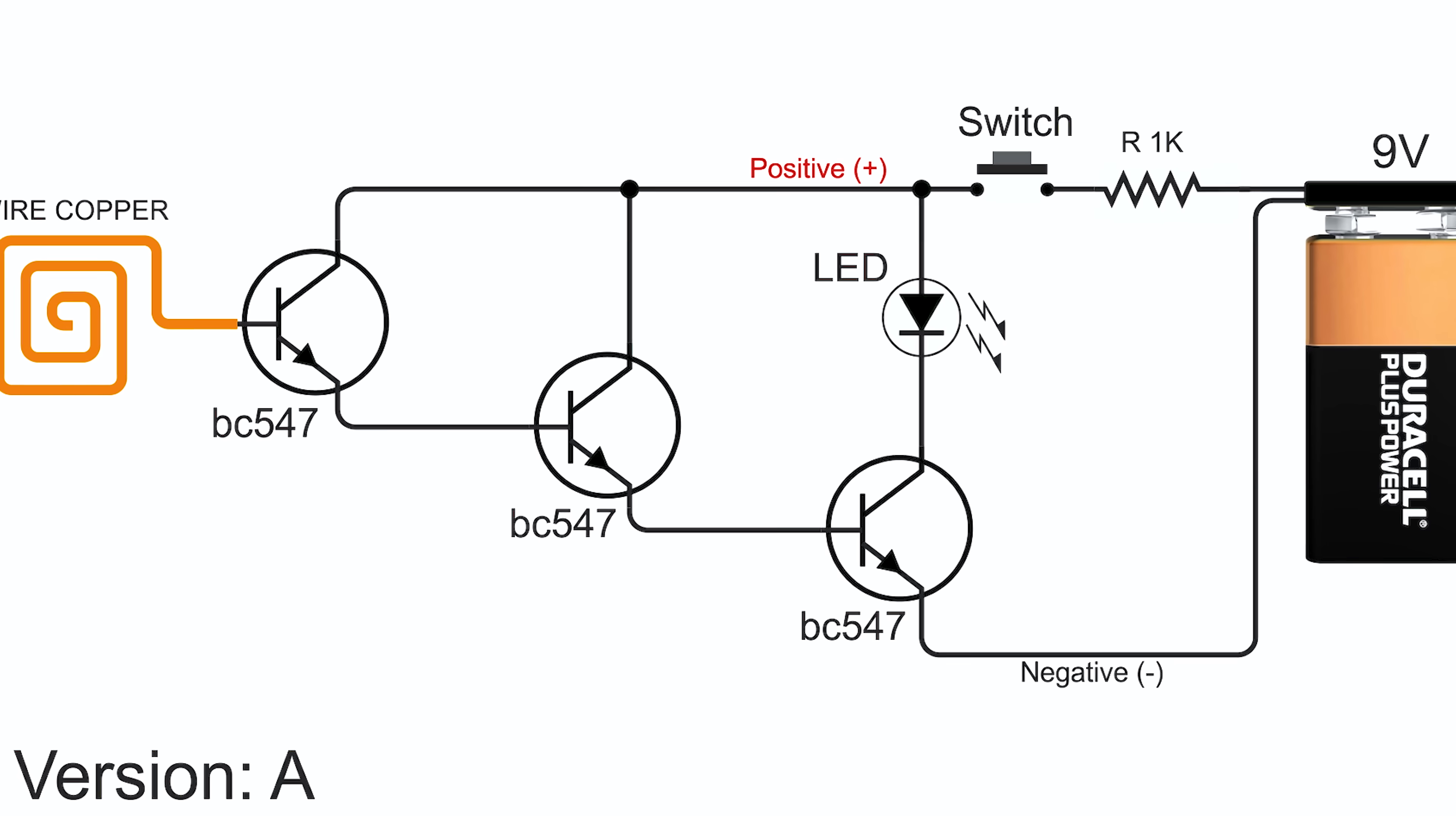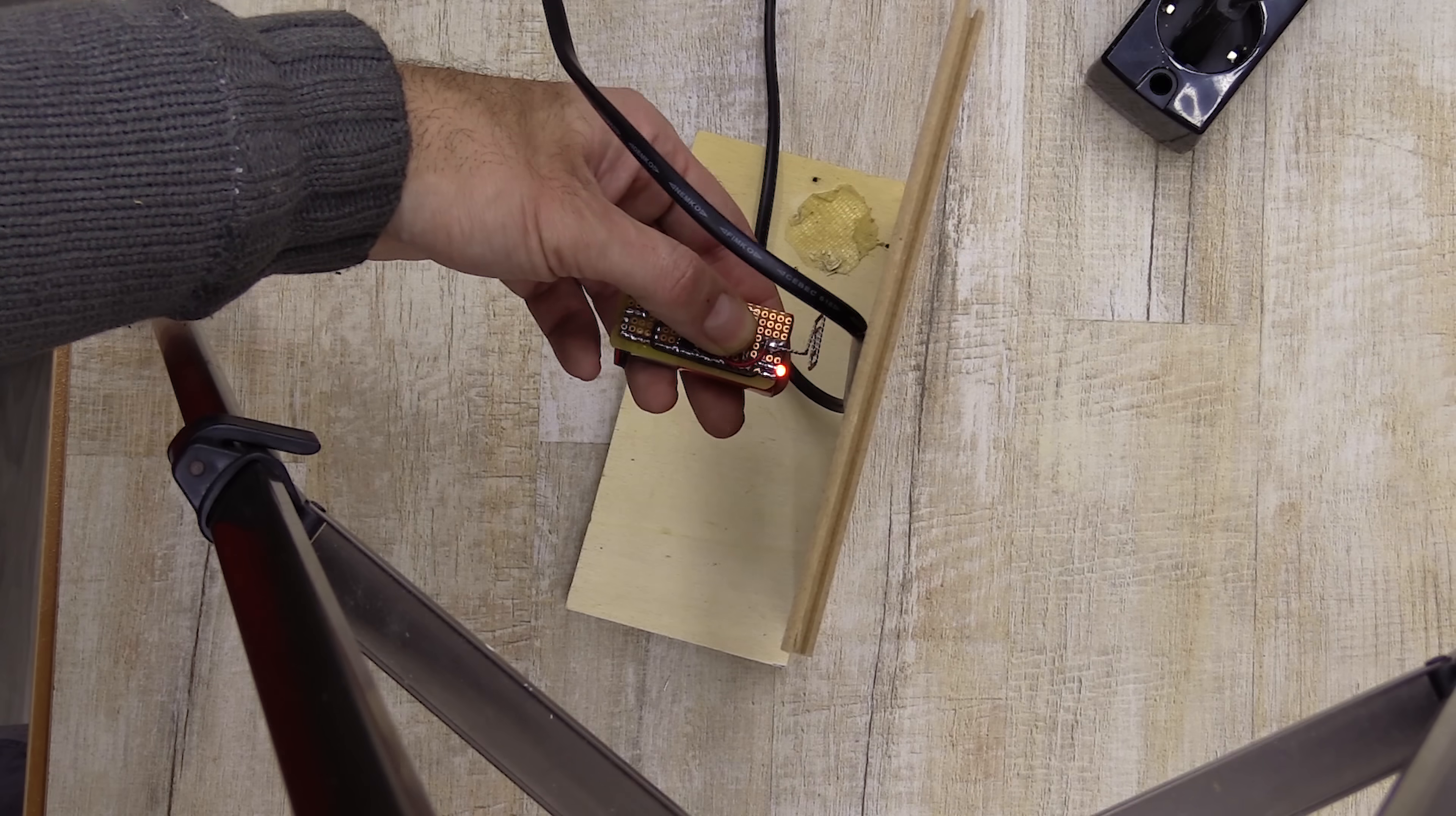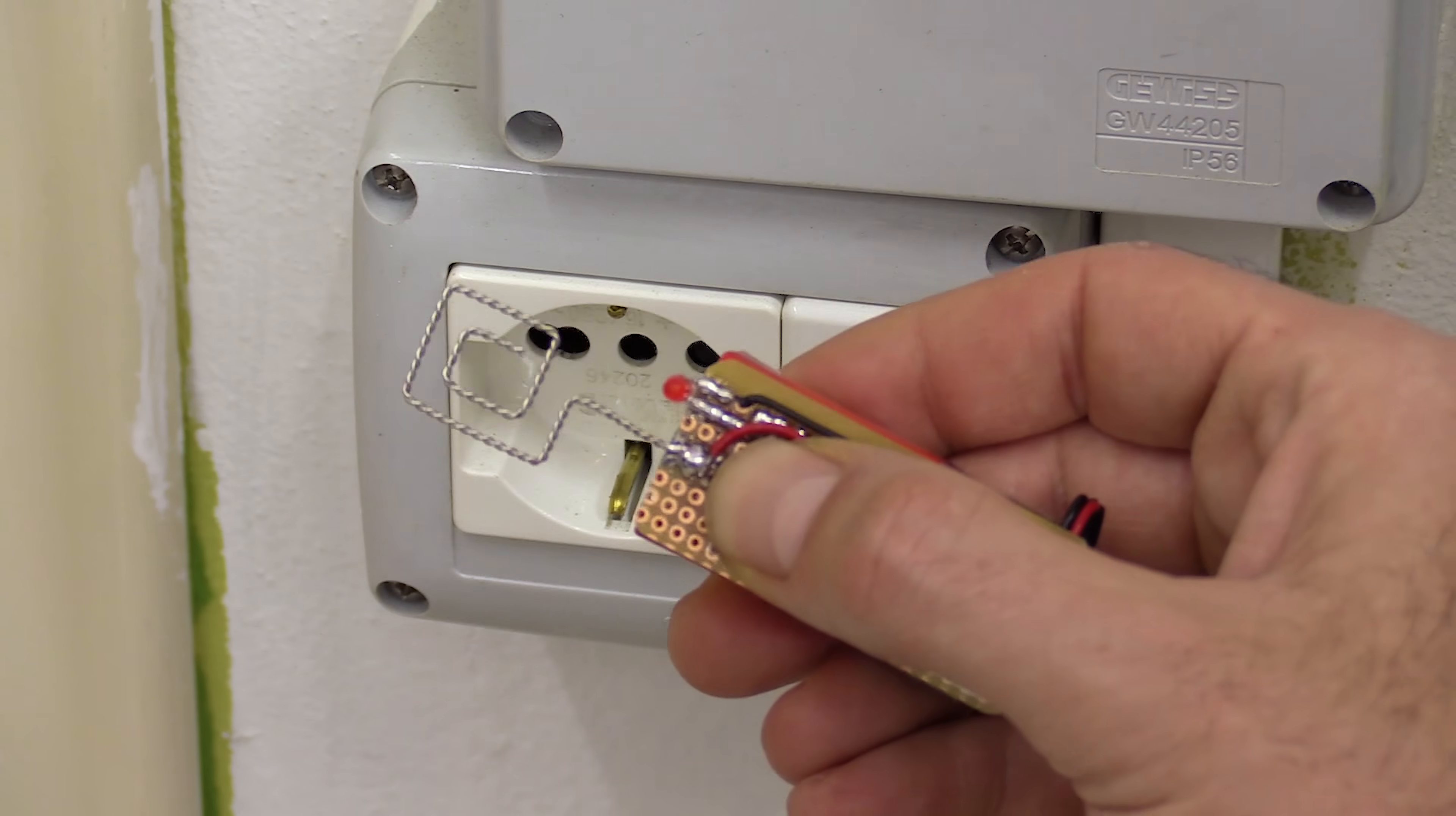The circuit diagram is very simple. It consists of three BC547 transistors. When the antenna comes close to an AC voltage source, the first transistor amplifies the very weak signal. The other two transistors further amplify it in cascade. The resulting signal can vary between zero and three volts. It works quite well as a tool, but it's not very reliable. There are too few components to provide an accurate response, and sometimes it may fail to correctly detect the presence of a live wire.